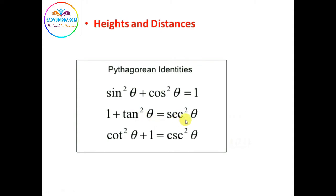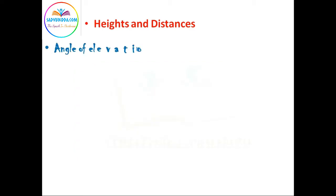Cotangent square theta plus one equals cosecant square theta.